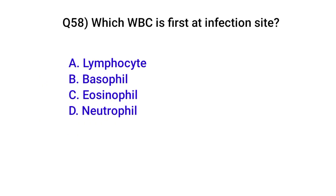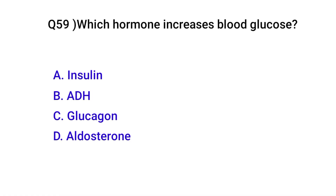Question number fifty-eight: Which white blood cell is first at the infection site? Correct option is D: Neutrophils. Question number fifty-nine: Which hormone increases blood glucose? Correct option is C: Glucagon.